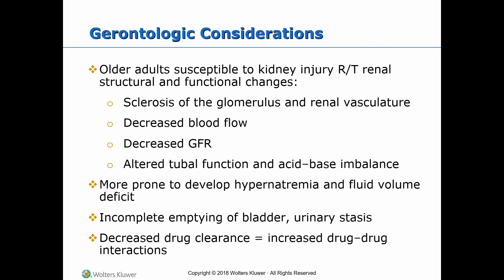The GFR decreases starting between 35 and 40 years of age. Older adults are more susceptible to acute and chronic kidney injury due to structural and functional changes of the kidney. This includes sclerosis of the glomerulus and renal vasculature, decreased blood flow, decreased GFR, altered tubular function, and acid-base imbalance. Aging reduces the ability of the kidneys to respond effectively to drastic or sudden physiological changes. The decrease in GFR along with use of multiple medications puts older persons at higher risk for adverse drug effects and drug-drug interactions. Older adults have a decreased sense of thirst and are more prone to develop hypernatremia and fluid volume deficit, which results in acute kidney injury.